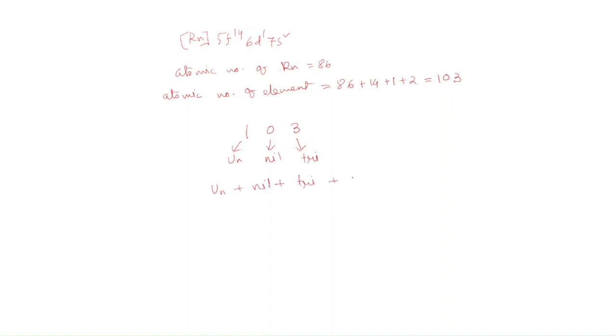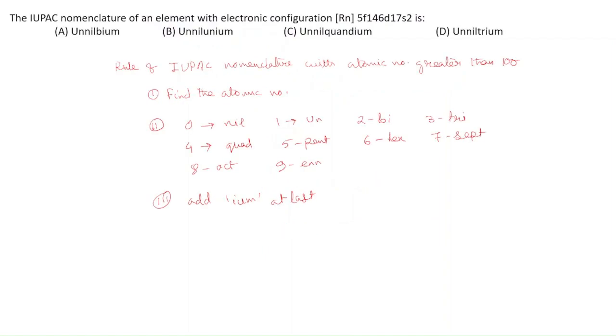Plus at the last we will add ium. Now see, at the last of tri there is i, at the first of ium that is i. So both are i, so we will write only one. That is un-nil-tri-um. This is the element. So correct option is option D. Thank you.